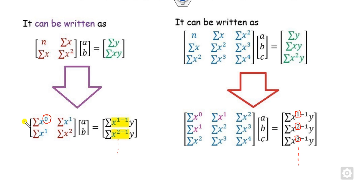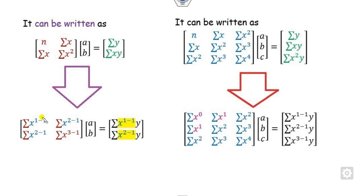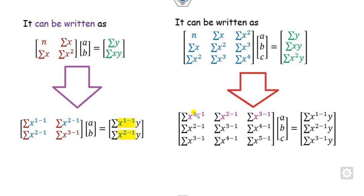Similarly, for the first row the powers are 1 minus 1, 2 minus 1, 3 minus 1 and so on. For the second row, all terms are expressed as 2 minus 1, 3 minus 1 and so on. You can express all three rows accordingly. If you generalize them, you get 1 minus 1, 2 minus 1, 3 minus 1, then 4 minus 1, 2 minus 1, 3 minus 1 and so on. Your target is to express this pattern into MATLAB programming.